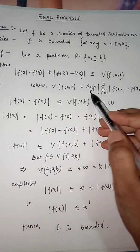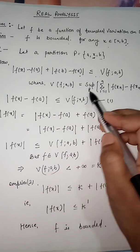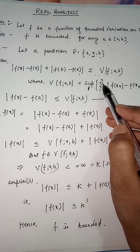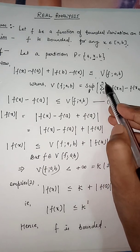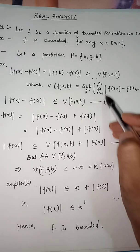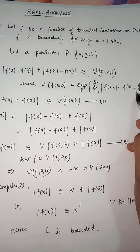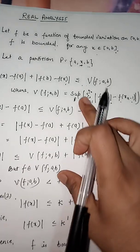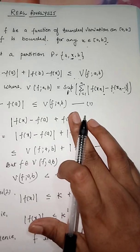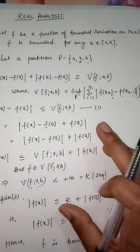The total variation V_a^b(f) is defined as the supremum over all partitions P of the sum: the supremum of the summation, with i running from 1 to n, of |f(x_i) - f(x_{i-1})|. This is the definition of bounded variation.